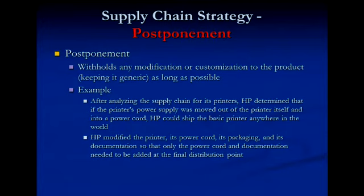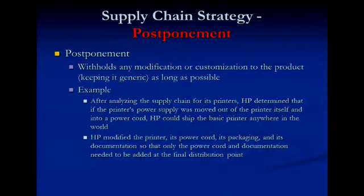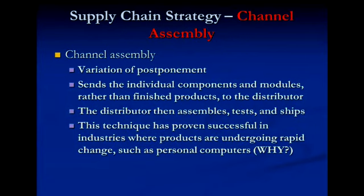Now let's talk about supply chain. Postponement is one of those high-level strategies that's usually a good idea. With postponement, you want to withhold the modification and customization of the product to keep it as generic as possible. For example, HP looked at their printers and determined the power supply should be moved out of the printer itself and into the cord — this basically allows HP to ship one printer to anywhere in the world, changing only the packaging and documentation for the final point.